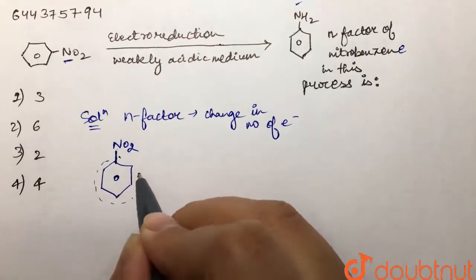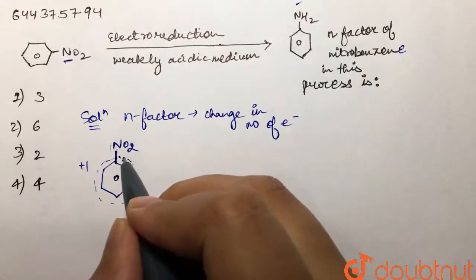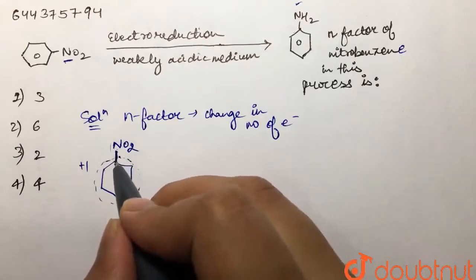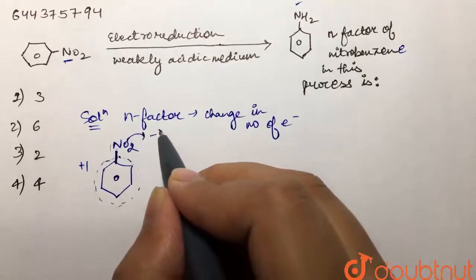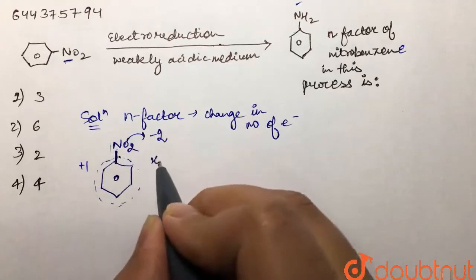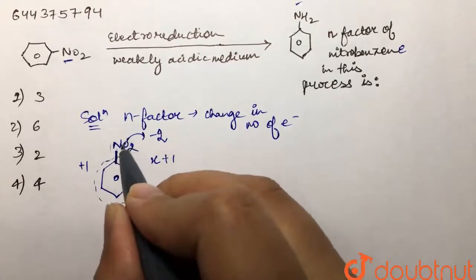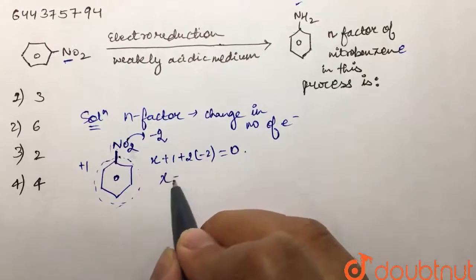So this would have a +1 oxidation state. Each oxygen has -2 oxidation state. So what would be the oxidation state of nitrogen? Let it be x. Plus 1 for this unit and then plus 2 times -2 for oxygen. This would be equal to 0. So x + 1 + 2(-2) = 0, which gives x = +3.